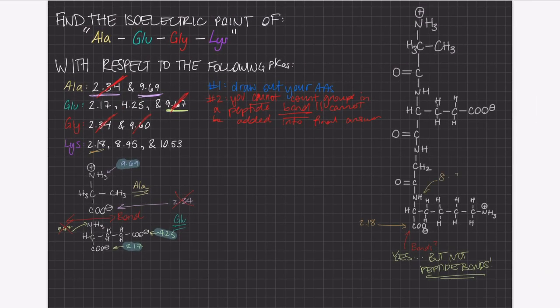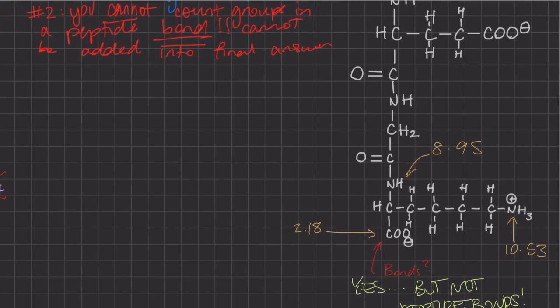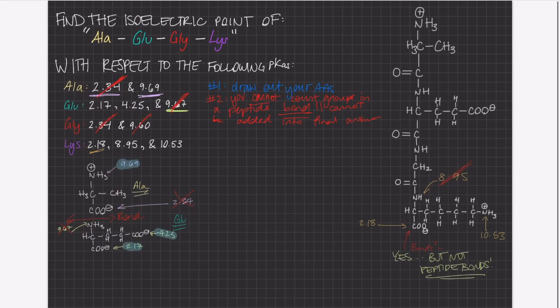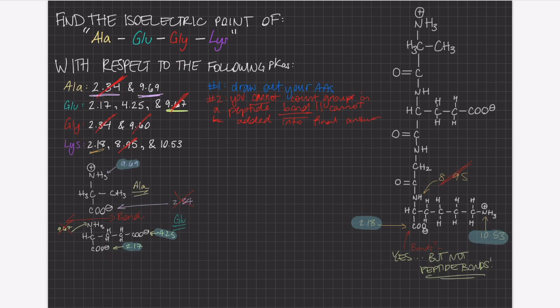Again, remember our rule. The highest pKa, usually pKa3, is reserved for the amino acid R-group, which would rule out our 8.95 immediately. Lastly, our 10.53 gets counted since it doesn't participate in bonding.